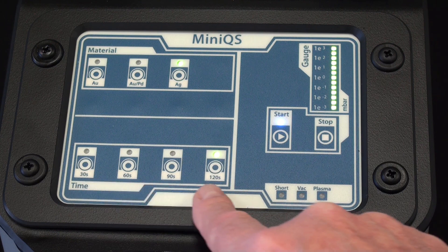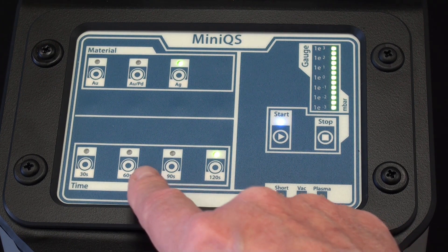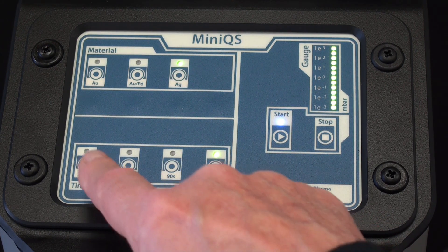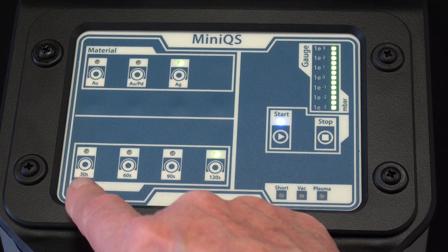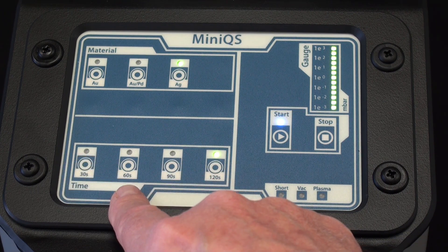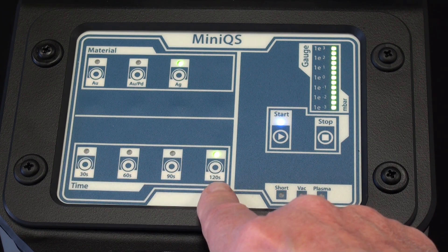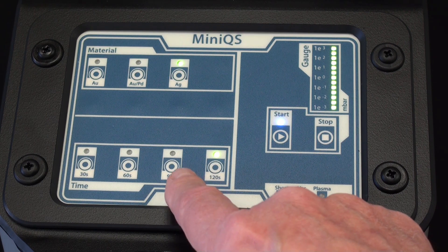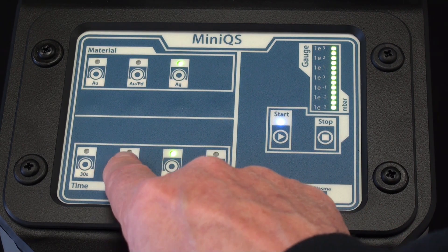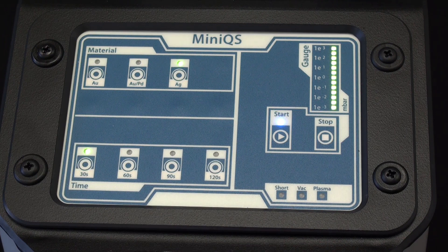Down below here on the bottom row, we have the times that you can coat your sample. You have 30 seconds, 60 seconds, 90 seconds, and 120 seconds, and again that's easily switched by just touching the button.